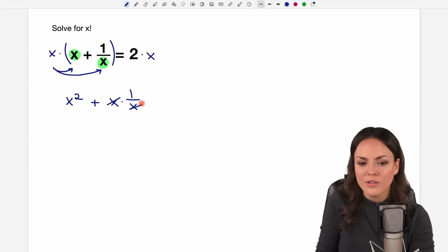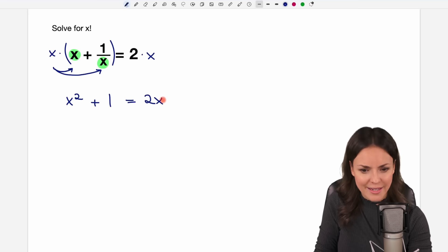So I write it like this x multiplied by 1 over x. x cancels out and only the 1 is left. So I just write the 1 here. On the other side we have the 2x.